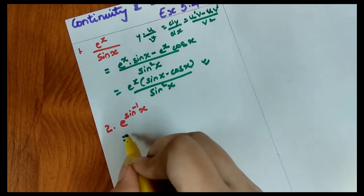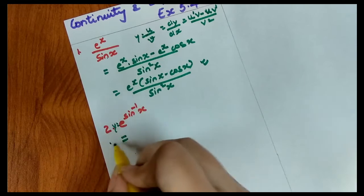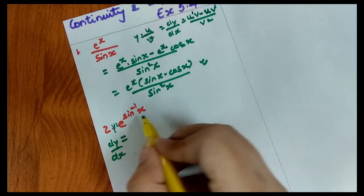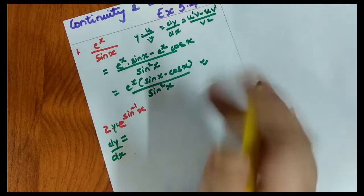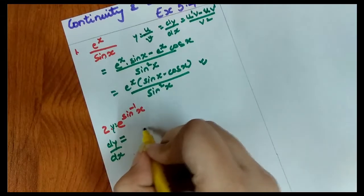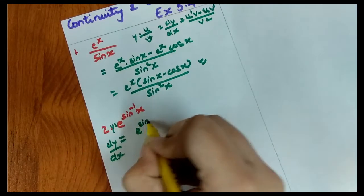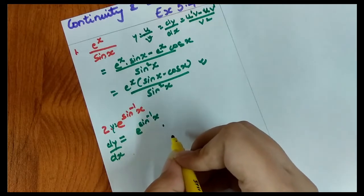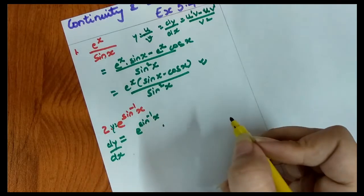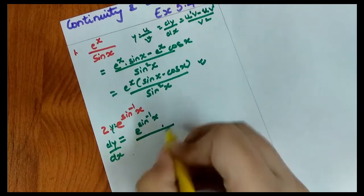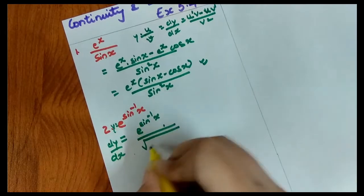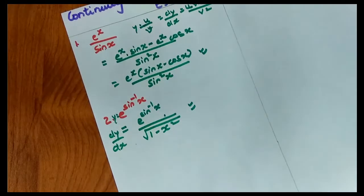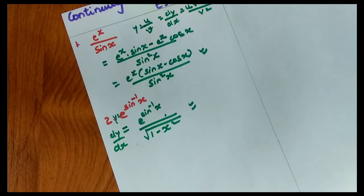So y = e^(sin⁻¹x), and dy/dx = e^(sin⁻¹x) times the derivative of sin⁻¹x. As covered in the last video on standard inverse trigonometry formulas, the derivative of sin⁻¹x is 1 upon under root (1 − x²). So our differentiation is e^(sin⁻¹x) / √(1 − x²).